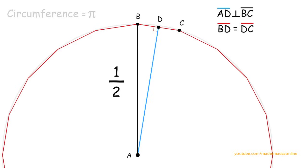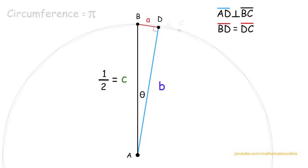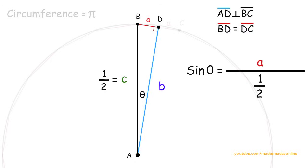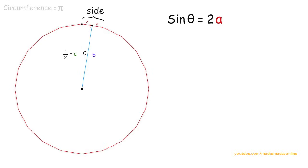Triangle ABD is a right triangle with sides A, B, and C and an angle called theta. Line DC also has length A. Using trigonometry, sine of theta equals the opposite side over the hypotenuse. Looking at our right triangle, the side opposite angle theta is A and the hypotenuse is one half, so A over one half simplifies to 2A. Looking at one side of the polygon, it equals A plus A, which simplifies to 2A. Therefore, the length of a side of the polygon is equal to sine of theta.